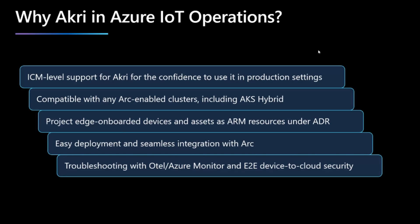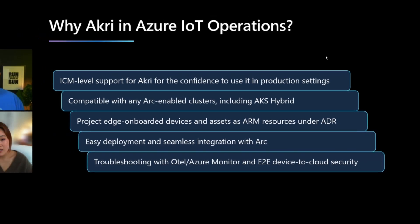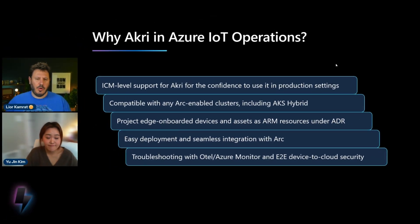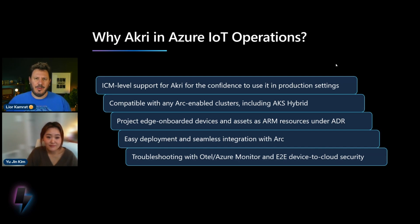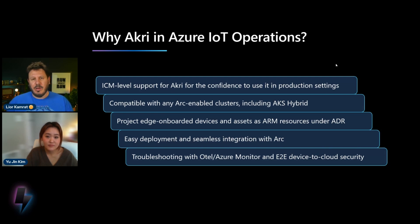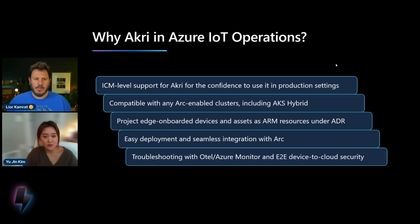This will also allow for much easier deployment and better user experience in general — you don't have to deal with Helm charts and writing a thousand parameters in your CLI. And finally, we also aim to provide troubleshooting with OpenTelemetry and Azure Monitor, as well as a more robust end-to-end device-to-cloud security. How do you actually project resources that are deployed outside of Azure and bring them to the control plane using Azure Arc? We're talking about projecting assets like leaf devices and projecting those as ARM resources eventually.